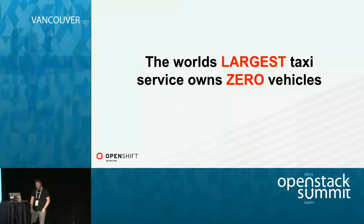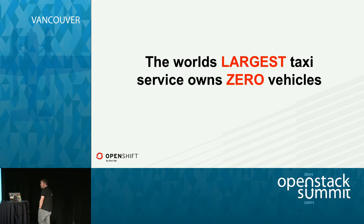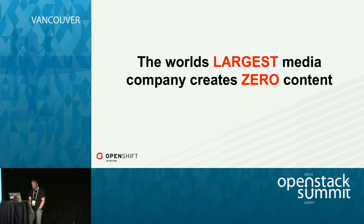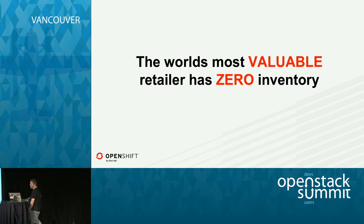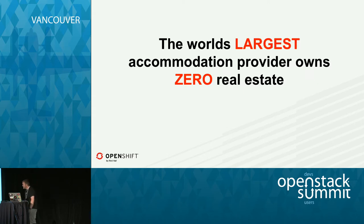You've probably seen this on Twitter — just how the world has changed. The largest taxi service company in the world doesn't actually own any taxis — it's Uber. The world's largest media company doesn't create or own any content — that's Facebook. The world's most valuable retailer, Alibaba, doesn't actually have any inventory. The largest accommodation provider, Airbnb, doesn't actually own any real estate.